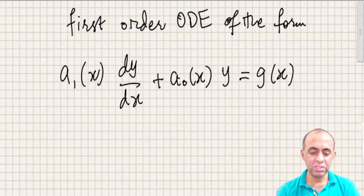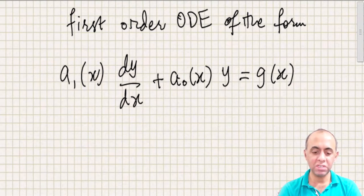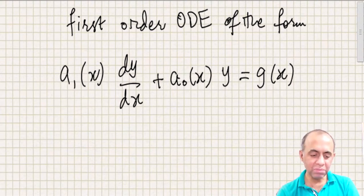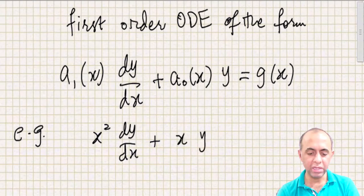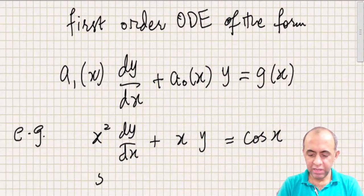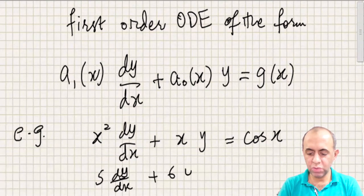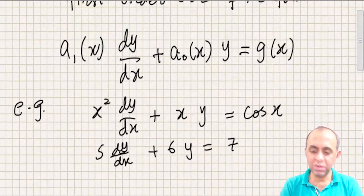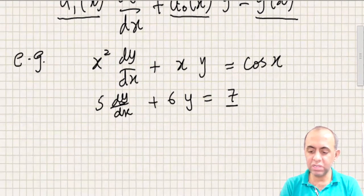It's not possible to separate these functions unless some coefficients become 0 or 1. An example could be x² dy/dx plus xy equals cos(x). Another example could be 5 dy/dx plus 6y equals 7. Here all the coefficients a1, a0, and the function g(x) are functions of x — even the constant 7 can be considered a function of x.